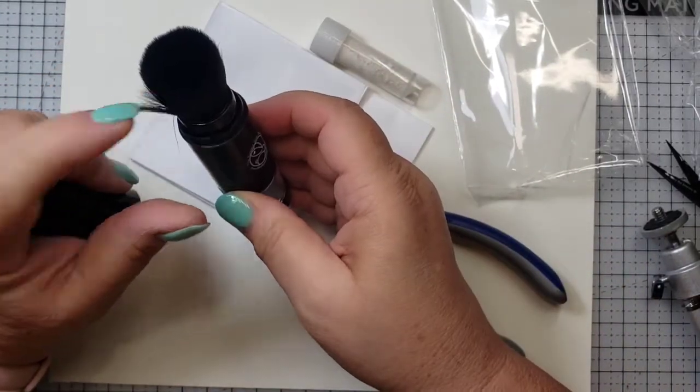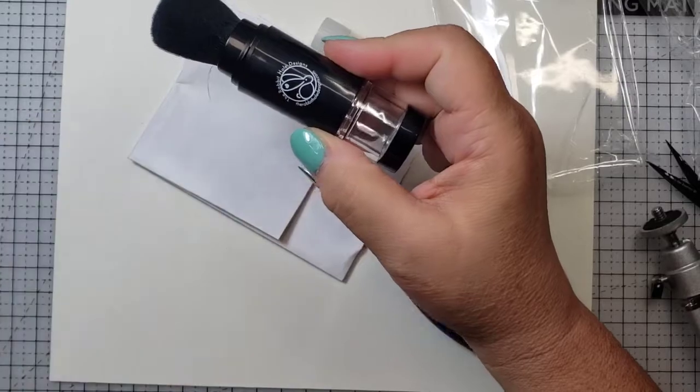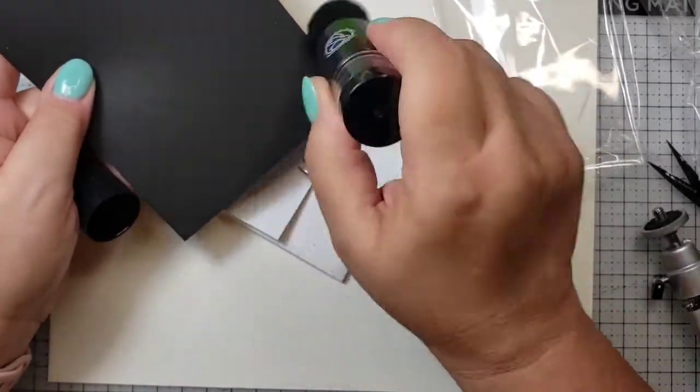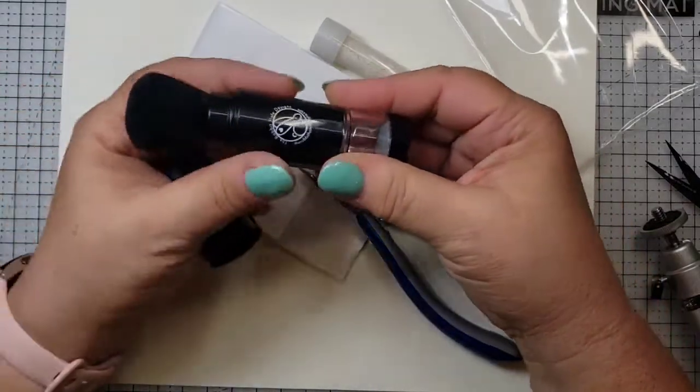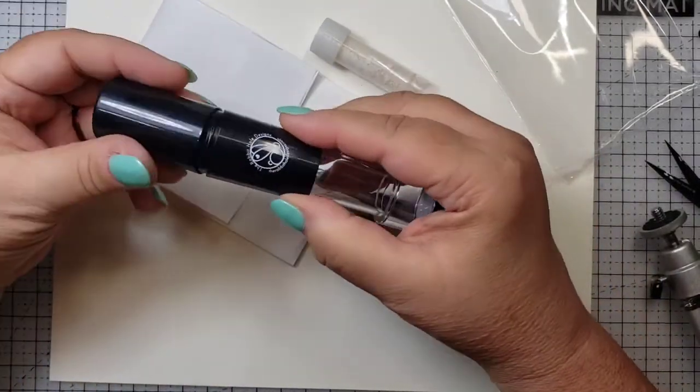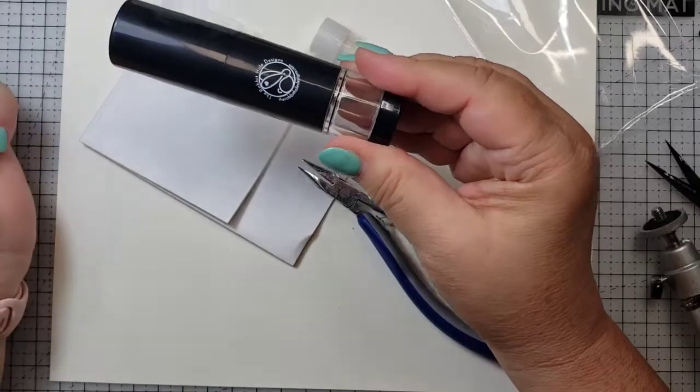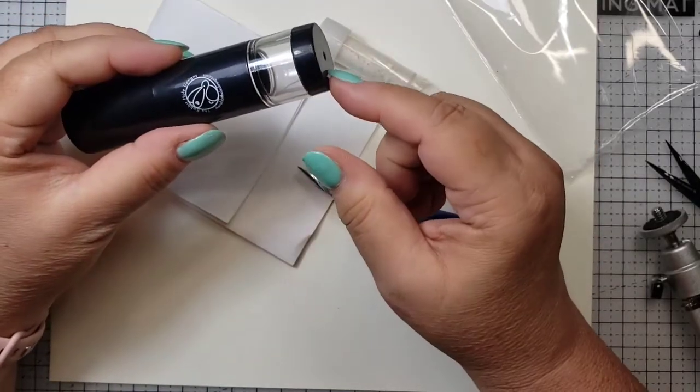So this is the vessel that holds the powder. It comes out of the brush. The brush is used to go ahead and put the product on your paper or whatever you're going to be embossing. So again, the lid comes up, the cap goes on and the bristles are all intact and you've got the vessel here.